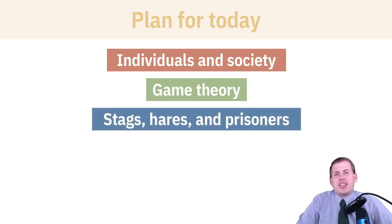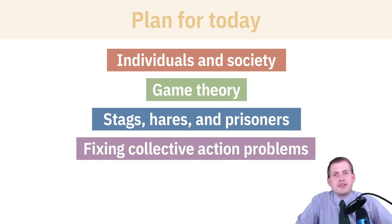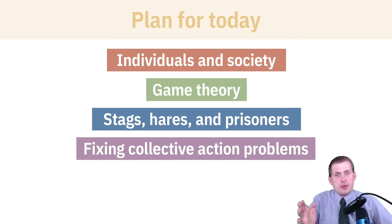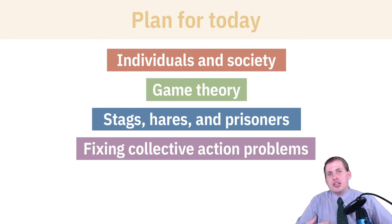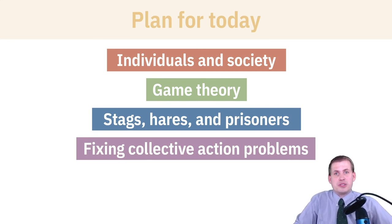Then we'll talk about a specific type of game theory game from your readings: the idea of a stag hunt, how that's related to the prisoner's dilemma, and why we care about this in an econ class. Finally, we'll talk about some ways of solving what are called collective action problems — mostly, what do you do when individual incentives don't line up with collective incentives, and how do you get people to act in the collective interest? This is something we care a lot about in public policy and public administration — getting people to contribute to the public good.